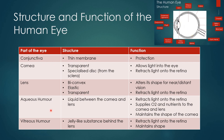The aqueous humor is the liquid between the cornea and the lens. It refracts light onto the retina, it supplies oxygen and nutrients to the cornea and the lens, and it maintains the shape of the cornea — because it fills that space, it pushes outwards on the cornea, helping it maintain that little bulge.